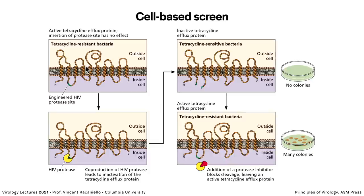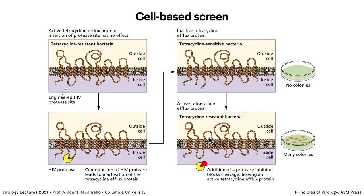Here's a cell-based screen: bacteria engineered to be resistant to tetracycline via a multi-pass tetracycline efflux protein in the membrane. An HIV protease cleavage site is inserted into that protein. If HIV protease is produced in the bacteria, it cleaves and inactivates the pump, making bacteria tetracycline-sensitive — no colonies grow in the presence of tetracycline. But if you have a protease inhibitor, the pump stays intact and colonies grow. You screen many compounds looking for those that allow bacteria to grow.